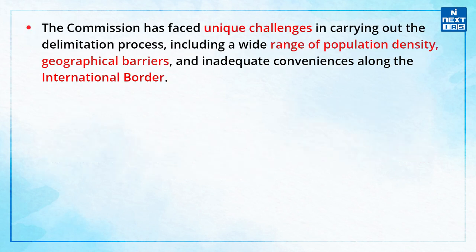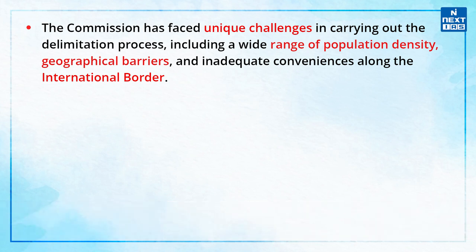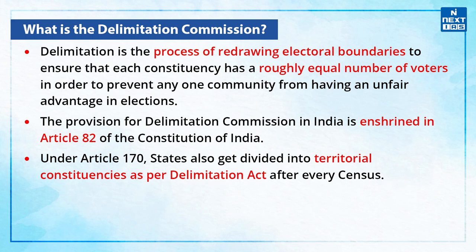The commission also faced unique challenges in carrying out the delimitation process, including a wide range of population density, geographical barriers, and inadequate conveniences along the international border. Delimitation is basically the process of redrawing electoral boundaries to ensure that each constituency has a roughly equal number of voters in order to prevent any one community from having an unfair advantage in elections.